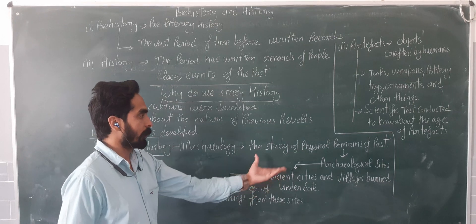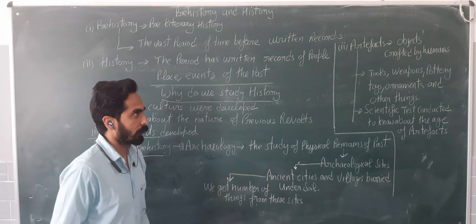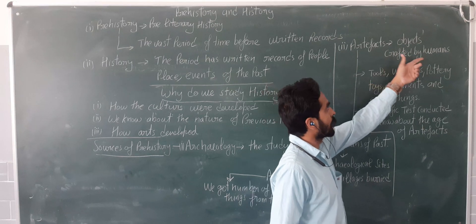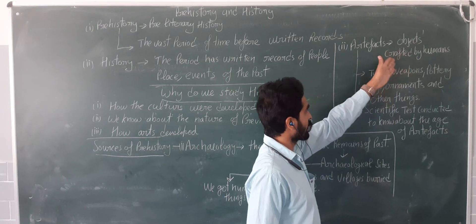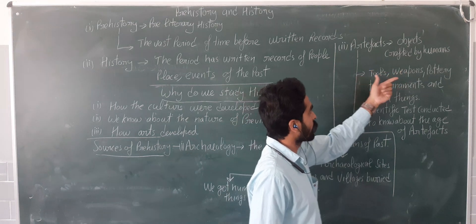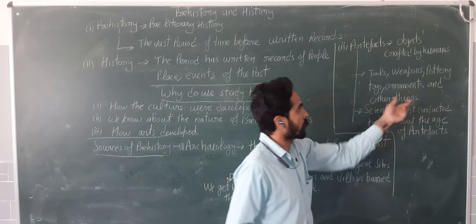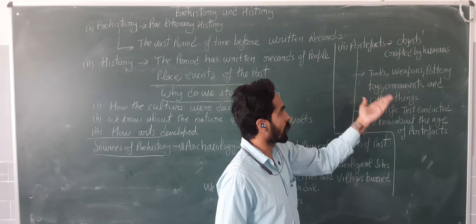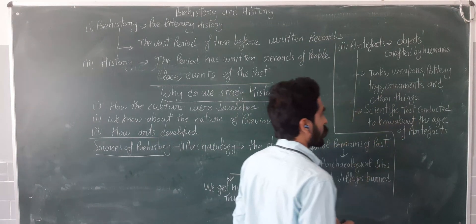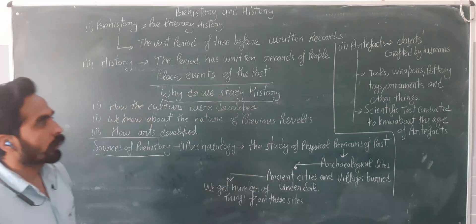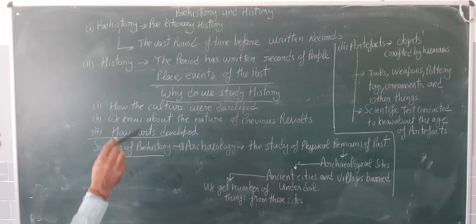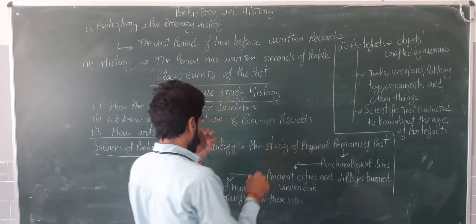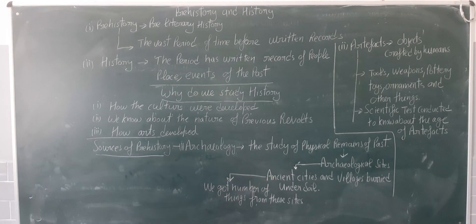The second source is artifacts — objects crafted by humans, like tools, weapons, pottery, toys, ornaments, and other things. There are different types of scientific tests conducted to know about the age of these artifacts. Then we can say that this artifact is related to the Vedic period, or this artifact is related to the Harappan civilization. I hope you are understanding the significance of this awareness.